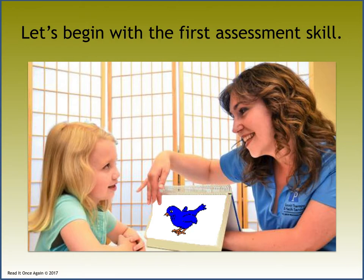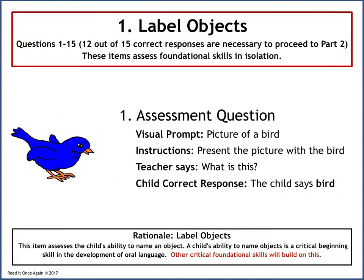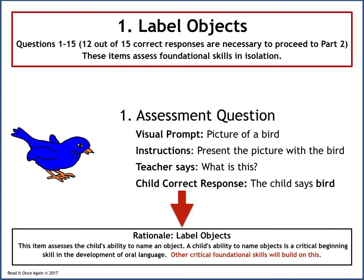Let's begin with the first assessment skill where the child is shown a picture of a bird. This is the beginning of Part 1, which includes questions 1 through 15. It is not necessary to ask the child all 15 questions if they fail 5 or more questions in a row. The assessment question is to label objects; visual prompt is a picture of a bird. Teacher says: What's this? Child correct response: the child says bird. The rationale — this item assesses the child's ability to name an object. A child's ability to name objects is a critical beginning skill in the development of oral language, and other critical foundational skills will build on this.